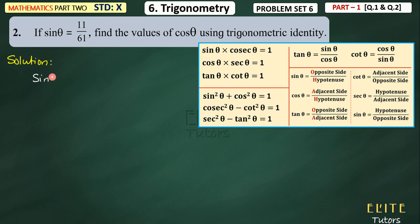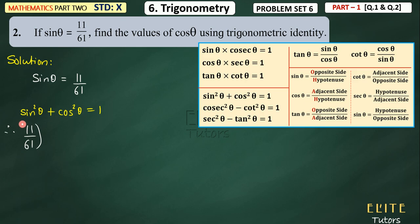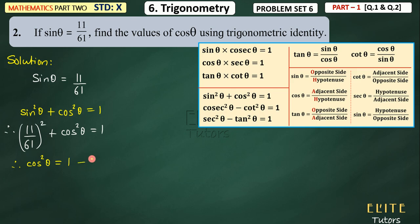Write that sin theta is 11 upon 61. And then we will write this formula: sin square theta plus cos square theta is equal to 1. Now what can you do? Sin value is 11 upon 61, so sin square theta is (11 upon 61) squared. Then cos square theta will remain. So cos square theta is equal to 1 minus sin square theta. You need cos theta value. The relation is plus, and the sin is plus, so here it will be minus. So cos square theta equals 1 minus (11 upon 61) squared.